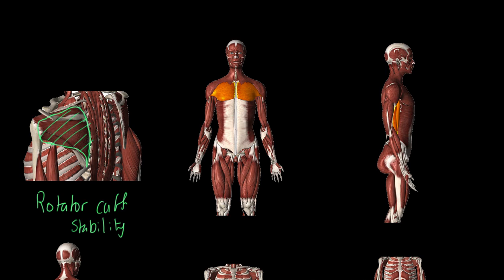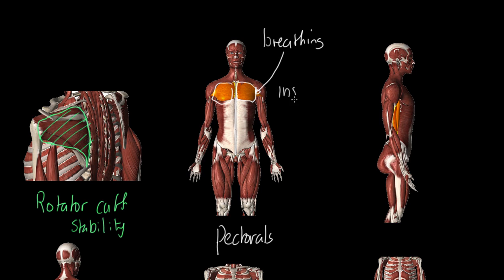We've got these chest muscles. We need to refer to these as the pectorals — that's a plural because it's a muscle group. We're actually seeing the pectoralis major as the main one, with other muscles underneath. These muscles are particularly important because they are breathing muscles, specifically involved in inspiration — breathing in during exercise.